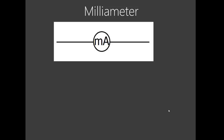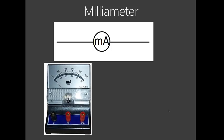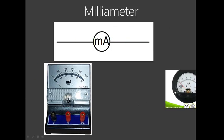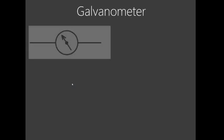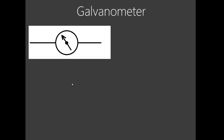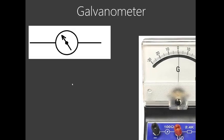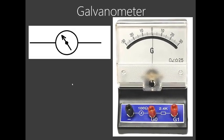Then we have a milliammeter. This is basically an ammeter which measures a very low current. Its symbol is just like an ammeter, but you see it has MA inside — milliammeter — or you can draw it in this style. Either way, it works. Then there is the galvanometer — a circle just with an arrow inside. This is a center-zero galvanometer.